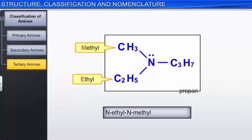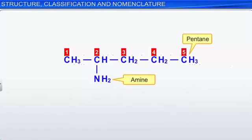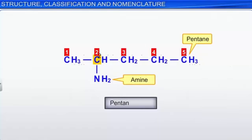If an amine group is present in the carbon chain, the numbering of carbon atoms should be done so that the carbon bearing the amine group gets the lowest number. The name of the compound is written by removing the final 'e' from the parent alkane, followed by the number of the carbon bearing the amine group, followed by the suffix amine. Thus, this compound is named pentan-2-amine.